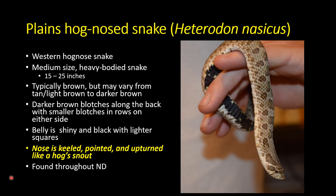The next snake is one of my favorites — the plains hognose snake, or western hognose, Heterodon nasicus. This is a medium-sized snake that tends to be heavy-bodied — short and thick rather than long and skinny. They have a light to dark brown background color with darker brown blotches, and their belly is black with white speckling.